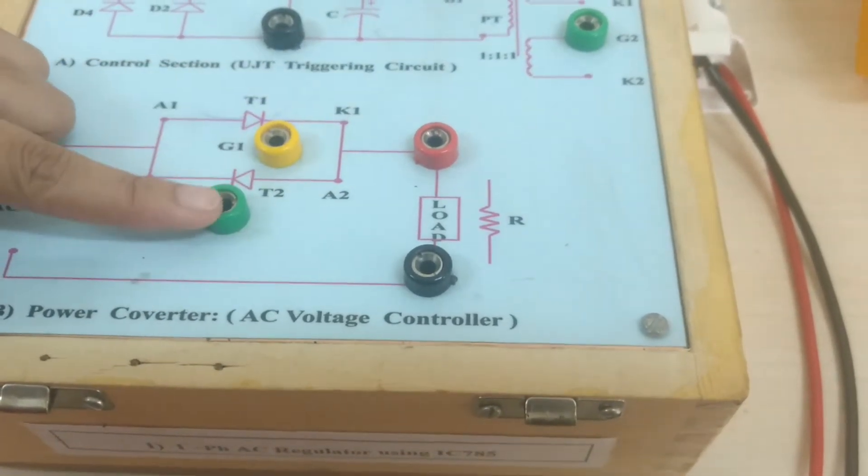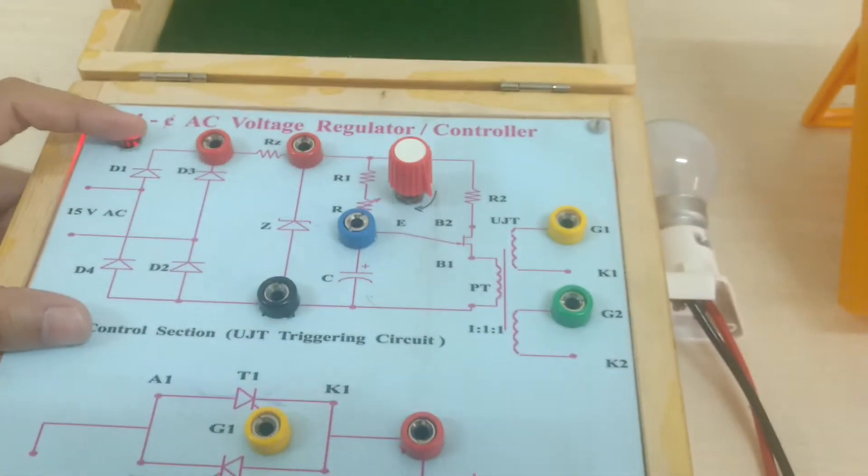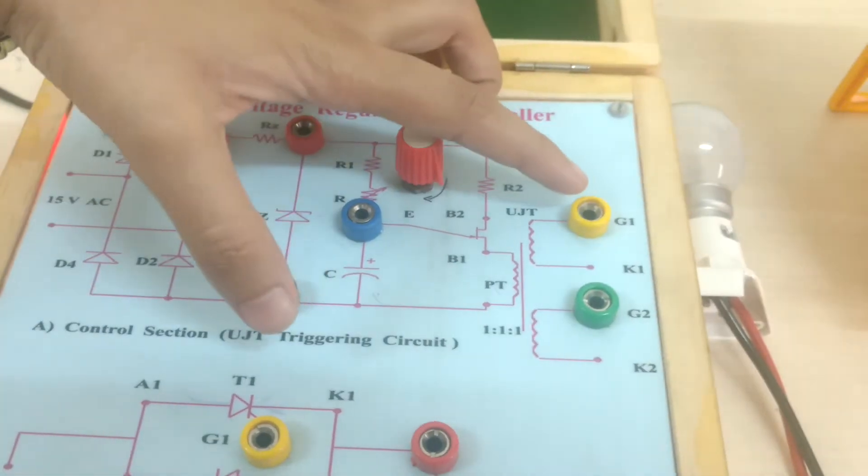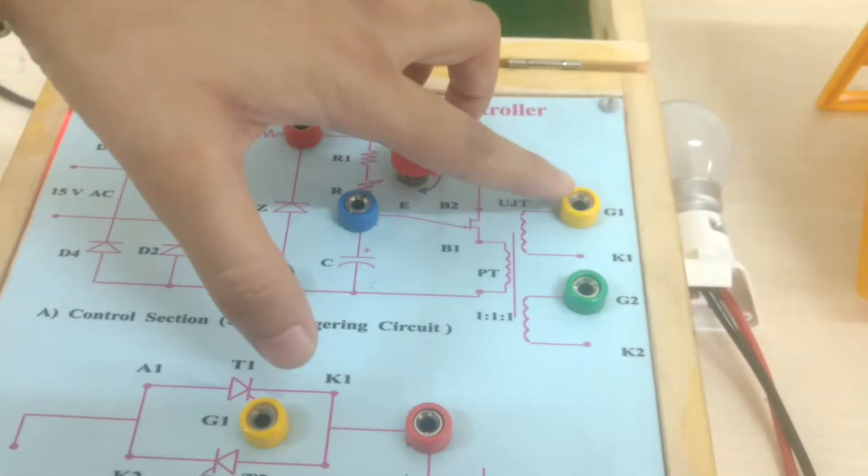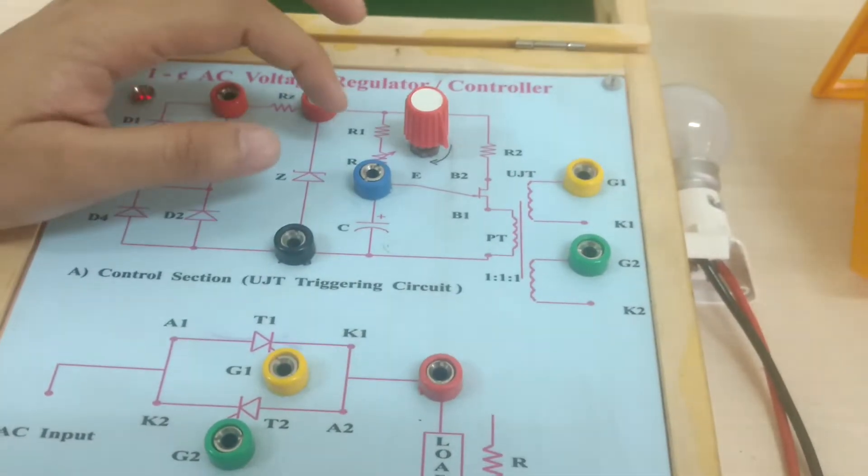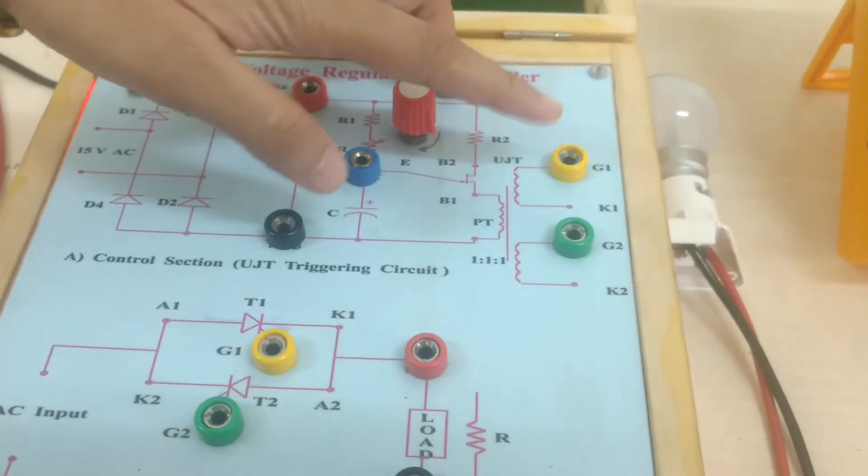Those gate signals are generated by the UJT triggering circuit. This UJT triggering circuit generates the two signals that are connected to G1 and G2. With the help of this, we can control the alpha. Here with this knob, we can control the alpha.